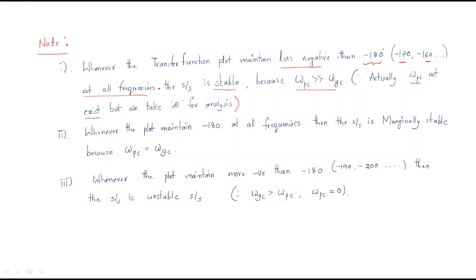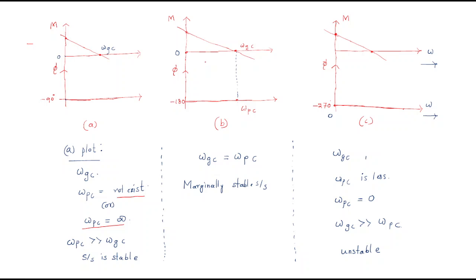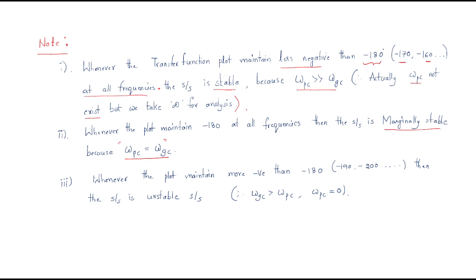Second point: whenever the phase plot maintains minus 180 degrees at all frequencies, the gain crossover frequency equals the phase crossover frequency — because wherever the magnitude reaches zero that gain crossover frequency coincides with the phase crossover frequency. Therefore the system is marginally stable.